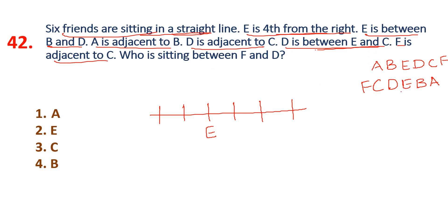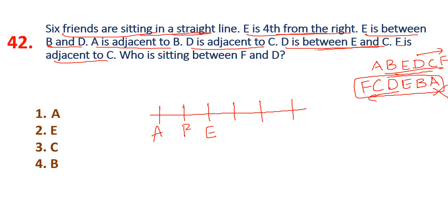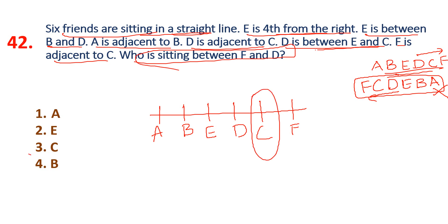Now observe: 1 is 0, 3 is 3, but here is 2. So automatic gain — eliminate type. This is correct. We will place this: A, B, E, D, C, F is the answer. Now the question is: who is sitting between F and D? C is sitting between F and D. Option 3.